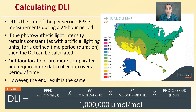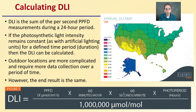Outdoor locations, as I said, are more complicated and require more data collection over a period of time. The calculation for DLI is PPFD times the minutes or hours times the seconds times the photoperiod, then divide by 1 million micromoles per mole. I'll be going through this and giving you an easy math equation so you can apply it to your own situation.